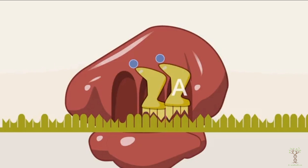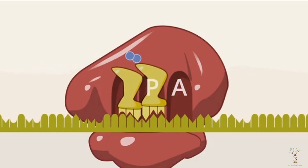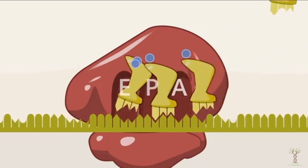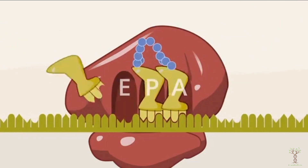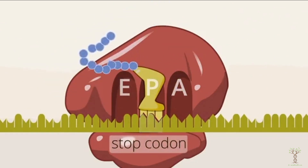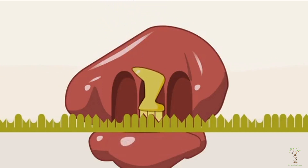There are three sites in the large subunit of the ribosome: the A site, the P site, and the E site. The A site is where the new transfer RNA comes in. The P site is where the peptide bond forms, and the E site is where the empty transfer RNA leaves the ribosome. Every time there's a new codon, a new transfer RNA matches it, peptide bonds form, and the polypeptide chain grows. When a stop codon is encountered, translation stops because no transfer RNA carries an amino acid for the stop codon.